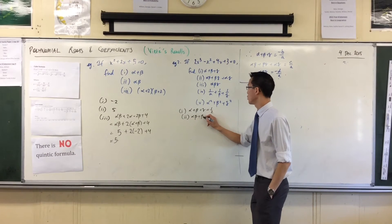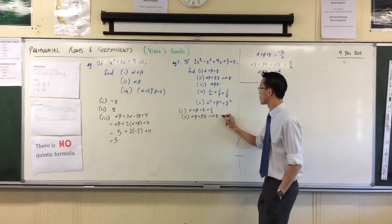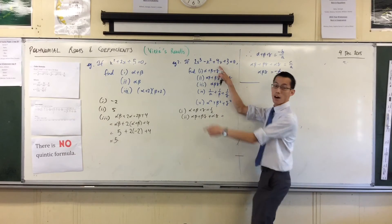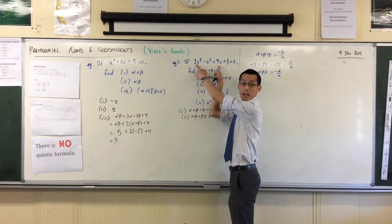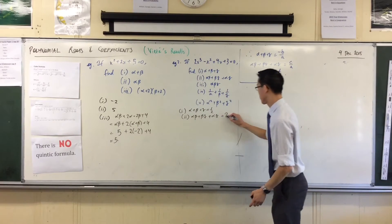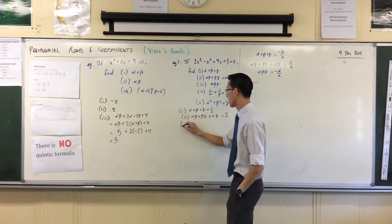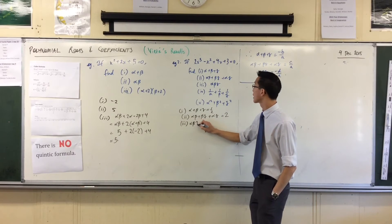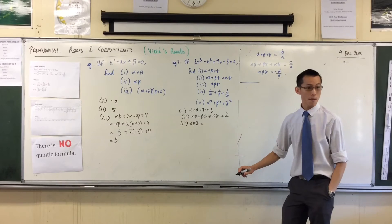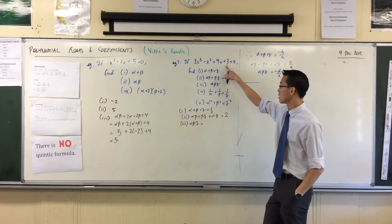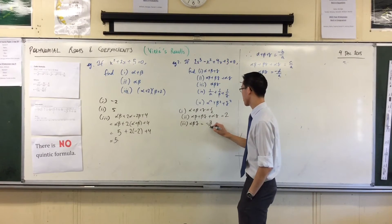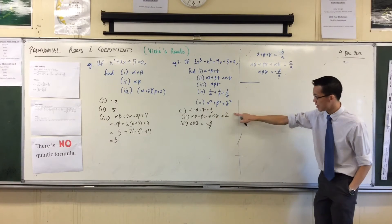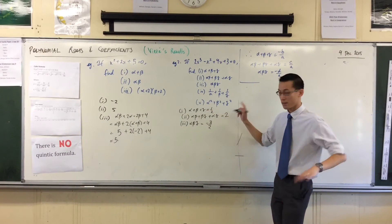The sum two at a time is C on A, which is just 2. That's nice. And then the last one, the sum three at a time, alpha beta gamma is minus 3 on 2. You're okay with that? Minus B on A, C on A, minus D on A.